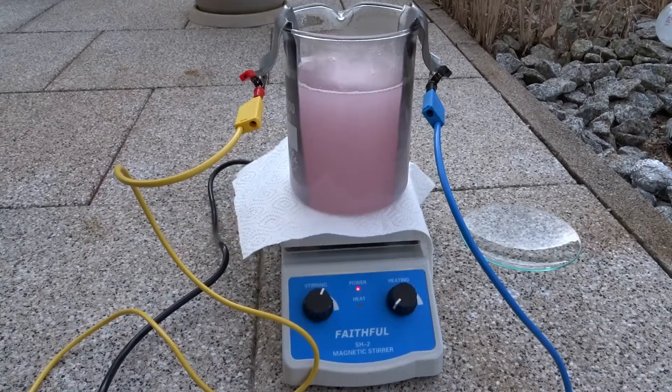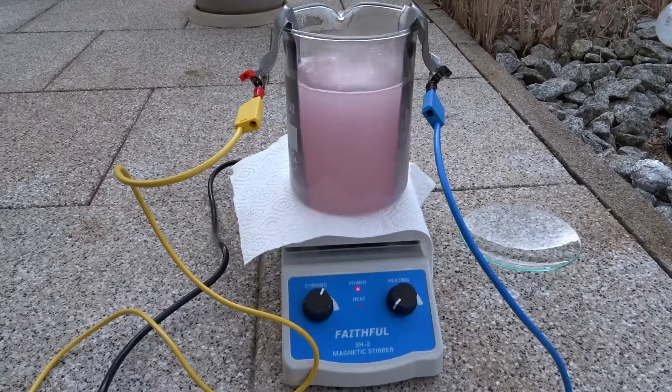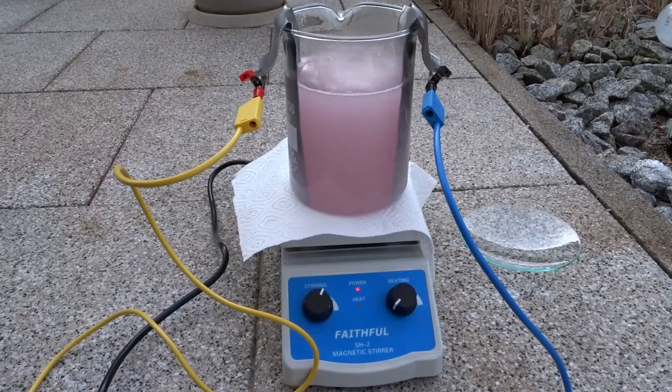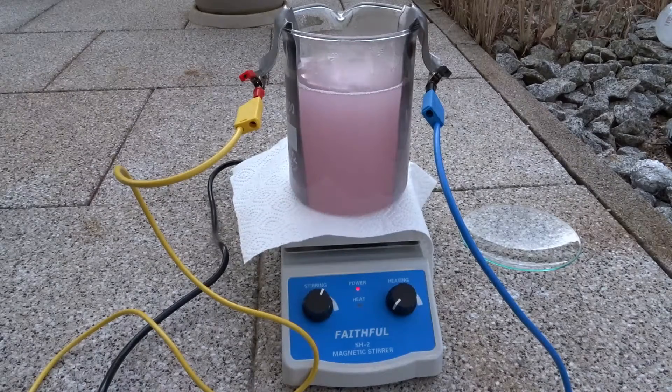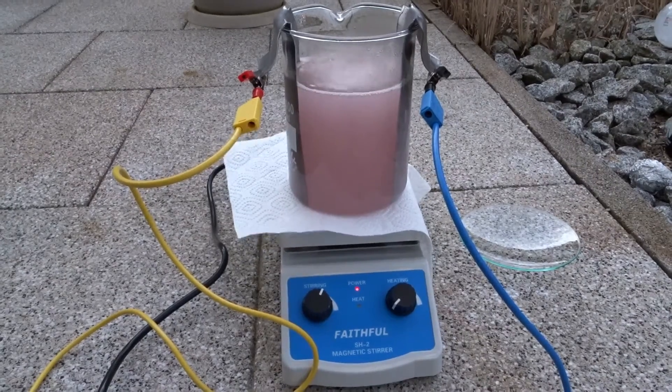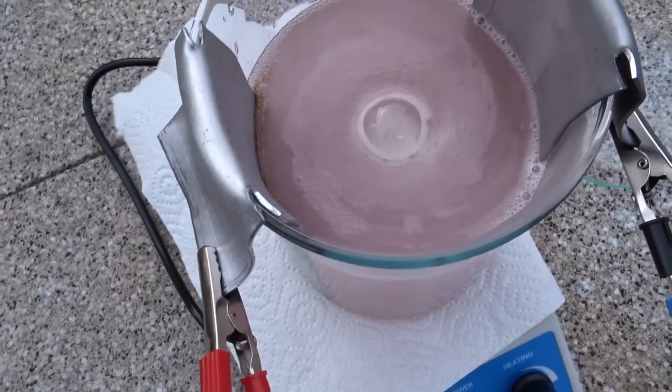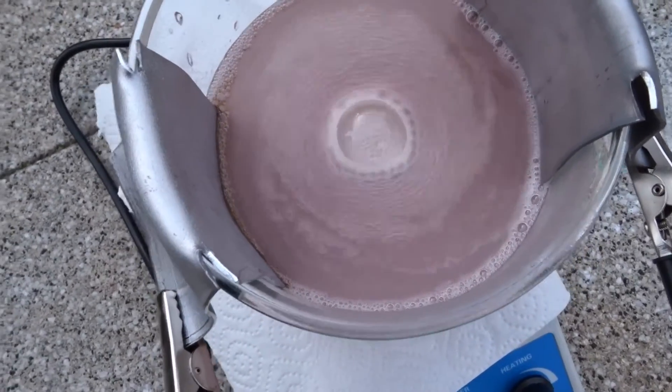Next step is to increase the voltage and check if there will be bubbling. You can see the first brown stuff forming.